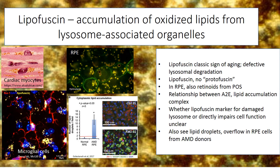It's worth pointing out that we call it lipofuscin and not protofuscin for a reason — most of this material is lipid waste product, not protein. In RPE cells, we have the addition of retinoids due to their role in degrading photoreceptor outer segment pieces. The relationship between the primary retinoid A2E and accumulated lipids at different portions of the retina is complex, but it's clear that both may have a component to play in the damage we see to these cells. The presence of lipofuscin is a biomarker for damaged lysosomes.